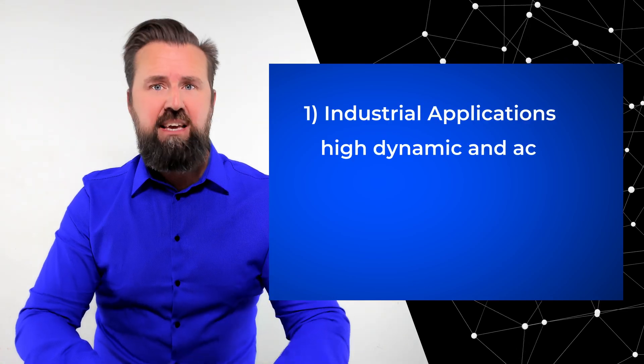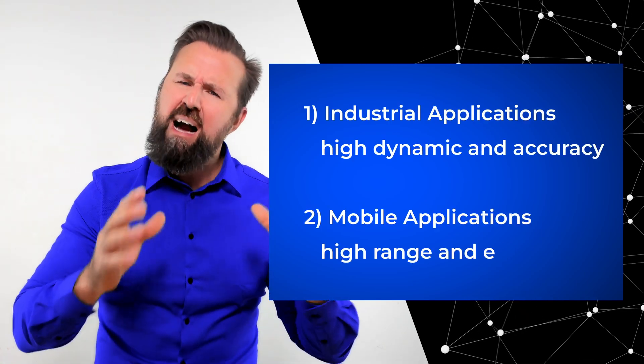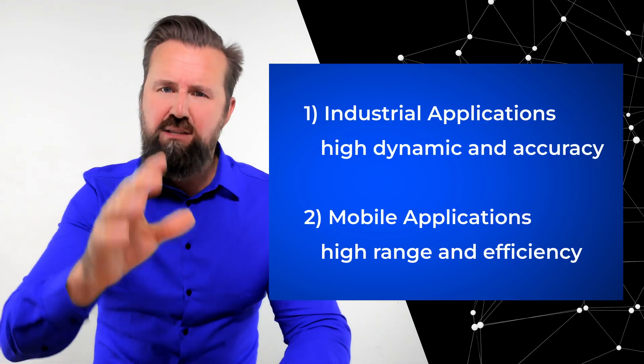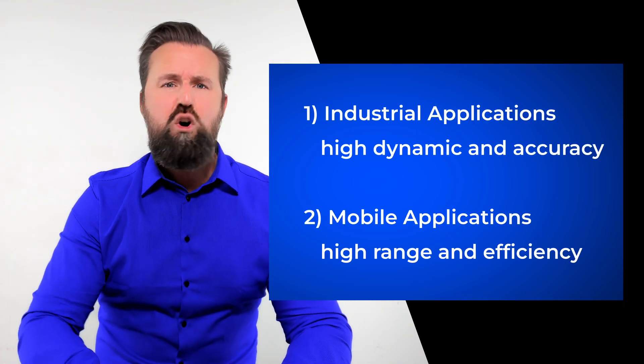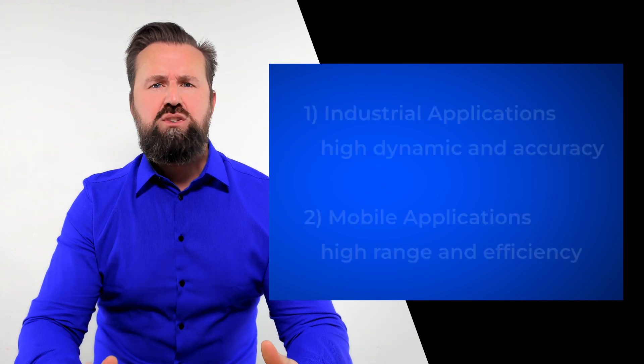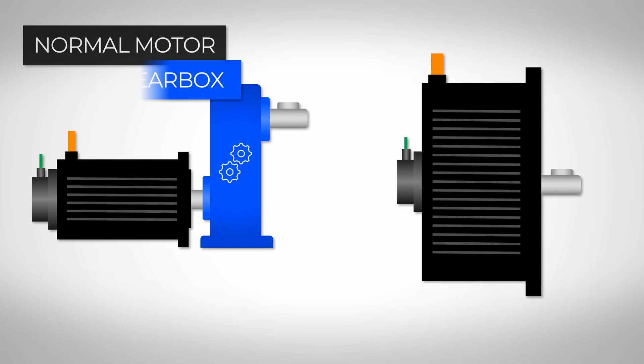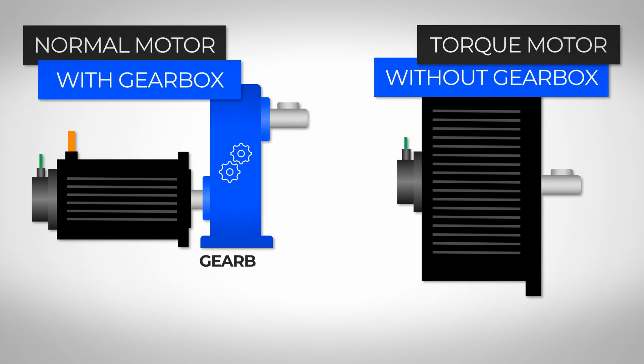There are two main applications for which high torque motors are especially good. These are industrial applications where high dynamic performance and high accuracy are required, and mobile applications where high efficiency is required. Because of the high torques, an additional gearbox is in many cases no longer necessary.